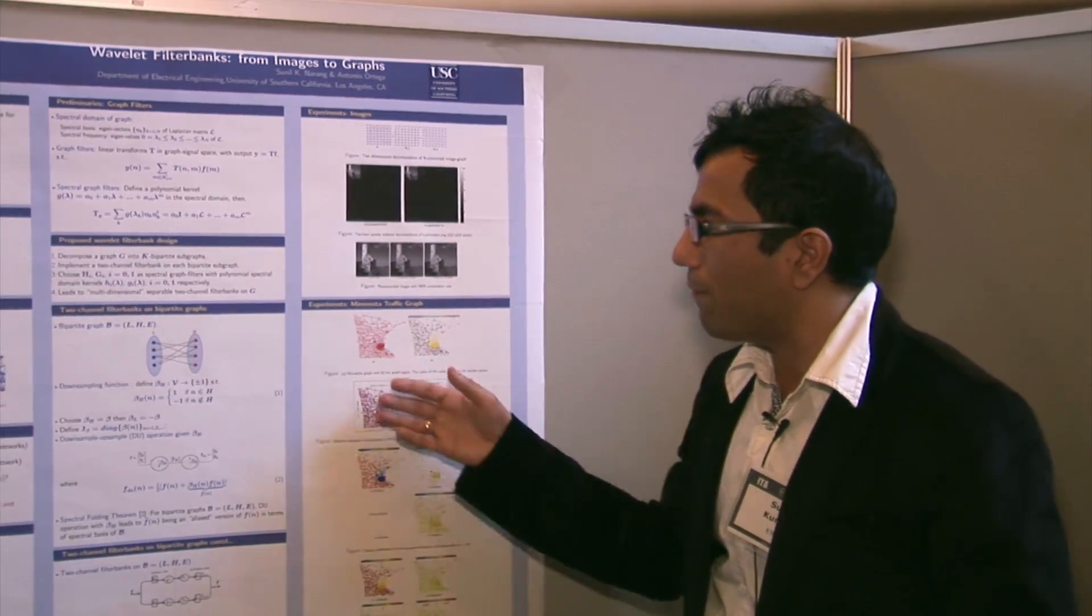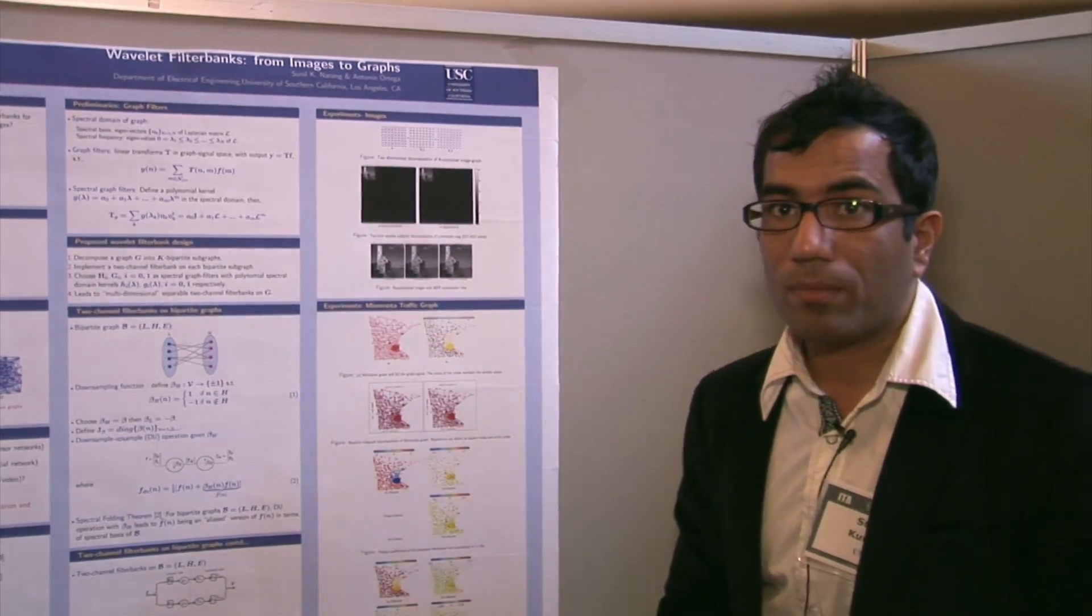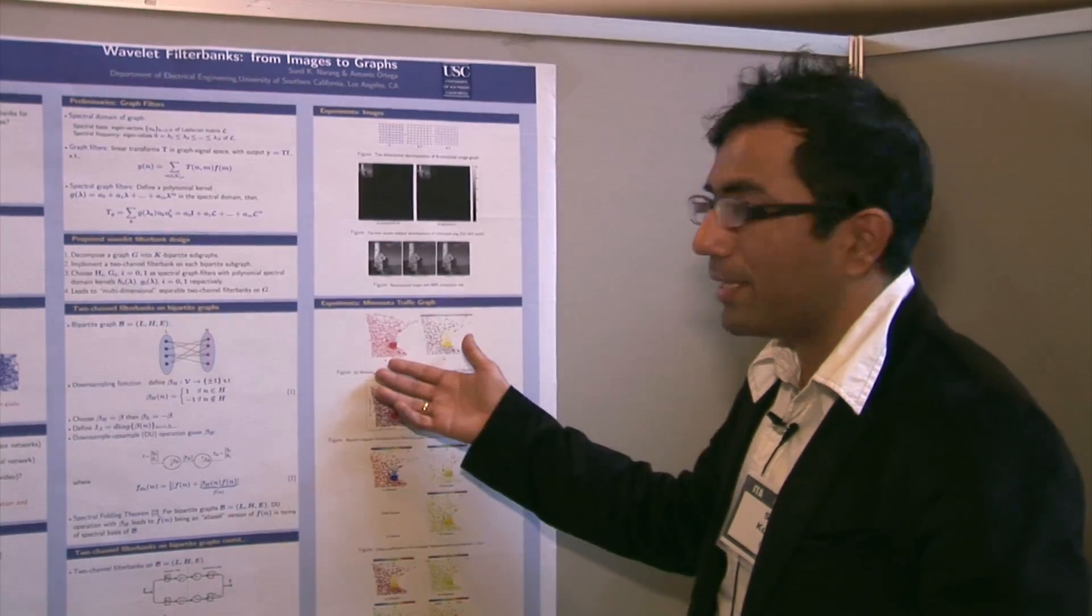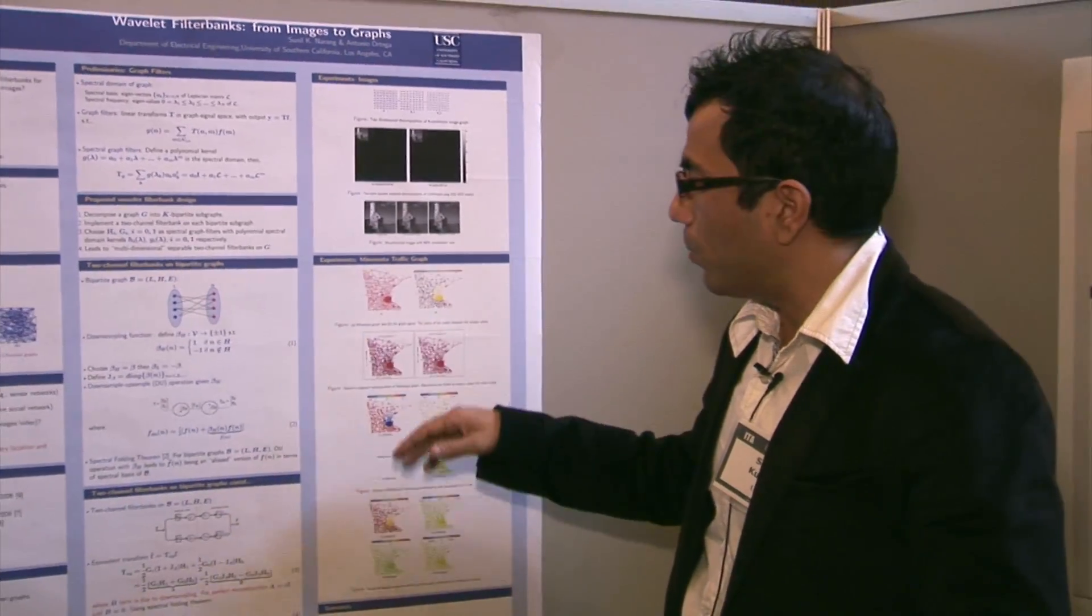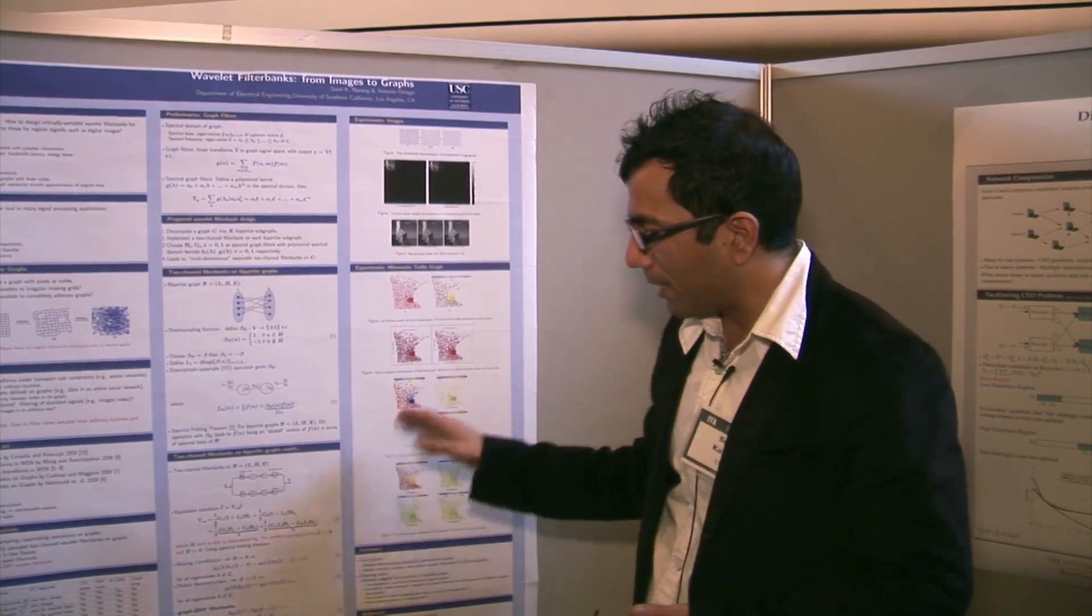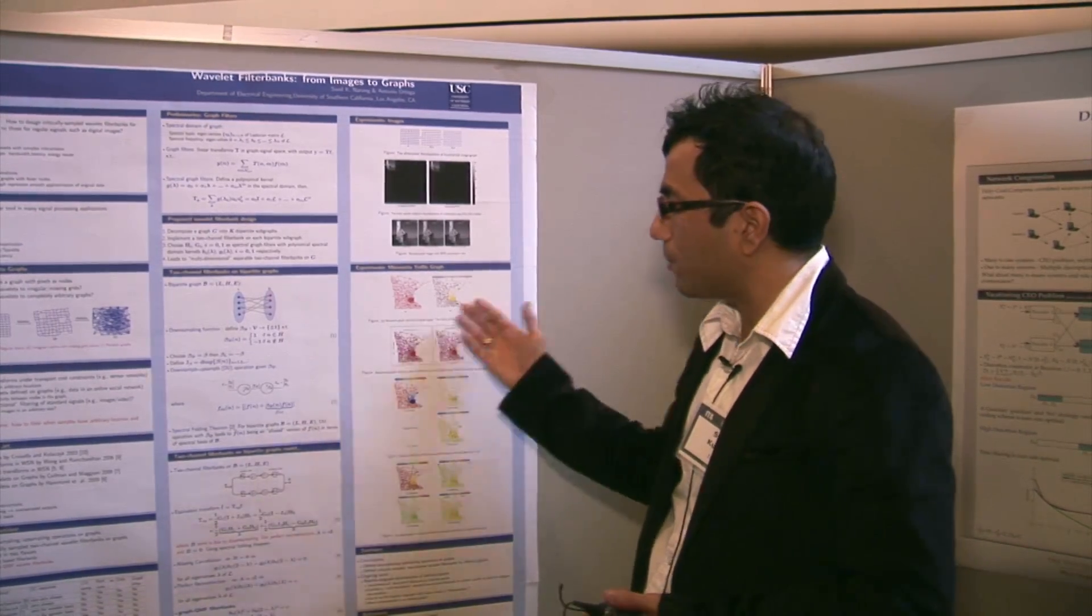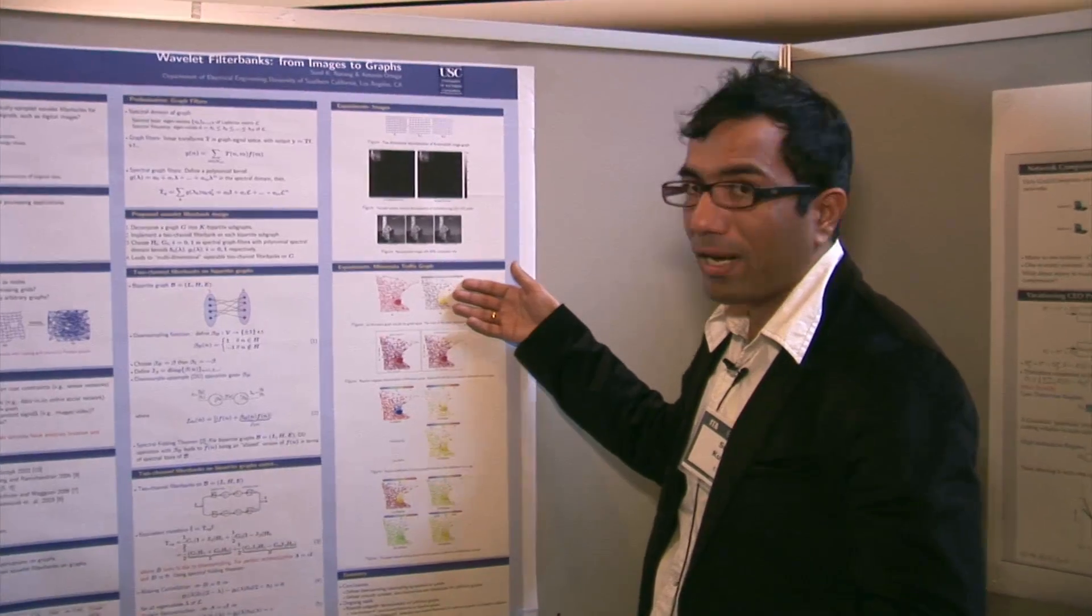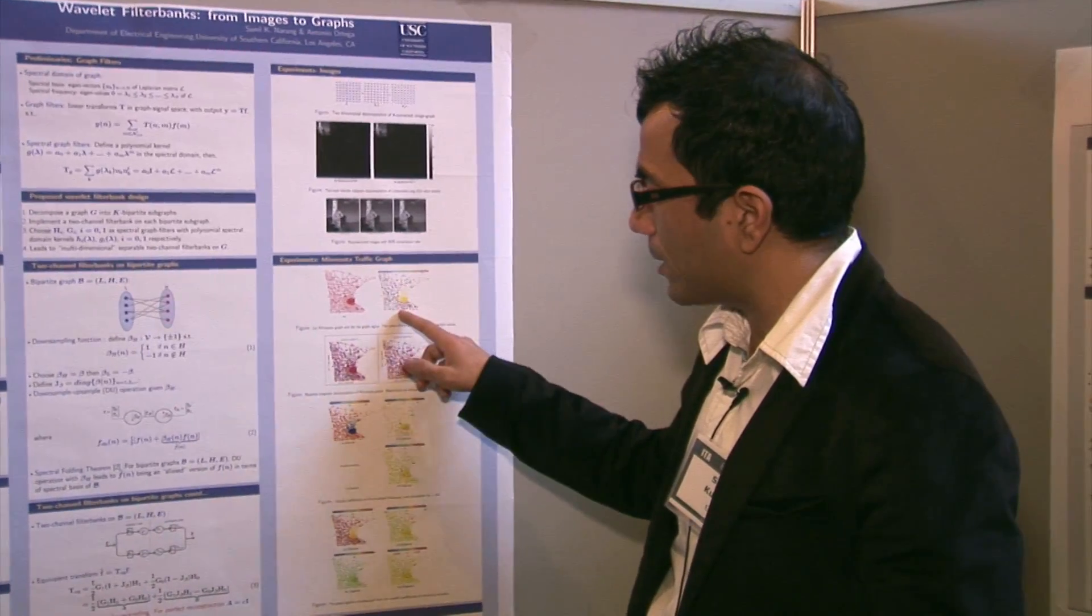This is another example of Minnesota traffic graph, which is completely arbitrary. We can decompose it into two bipartite graphs, and then we apply a graph QMF filter bank on each bipartite graph. This is the signal we are analyzing, which has a sharp discontinuity.